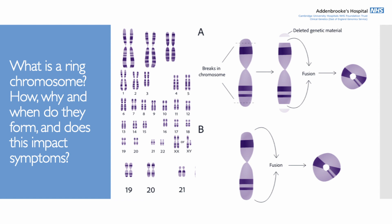We'll start with some of the basics — I'm sure many of you know the answers already, but it's worth going over them anyway. What is ring chromosome, and how, why, and when do they form? Chromosomes are structures that all of our genes are stored on. They all come in pairs, numbered 1 to 22 in both males and females, and then the sex chromosomes differ: females have 2 X chromosomes and males have 1 X and 1 Y.